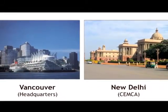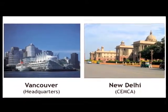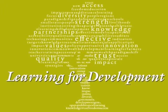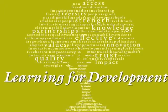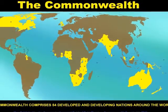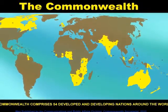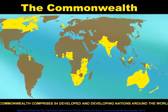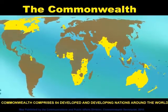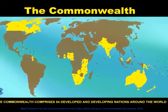First, a word about my organization, the Commonwealth of Learning, which is an intergovernmental body established by Commonwealth heads of government and located in Vancouver, Canada, with an office in Delhi. Our motto is learning for development. We work in 54 Commonwealth member states in all the regions of the globe, and my examples will be from these Commonwealth countries.